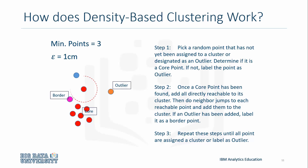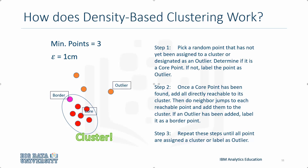Then do neighbor jumps to all reachable points and add them to the cluster. Keep finding neighbors until you're unable to — this point would be labeled as a border. Keep repeating these steps until all points have been labeled or assigned to a cluster. In this case, the last two points are also outliers. Now we have our cluster.